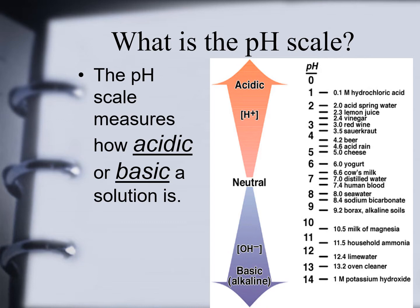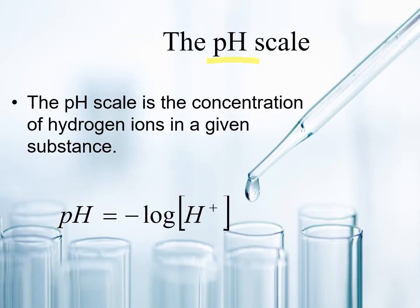Looking at the scale, this side is acids and this side going down is basic. Another term for basic is alkaline. A substance is acidic if it has a pH of 0 to 6, and basic if it has a pH of 8 to 14. Always remember that 7 is neutral — the best example is distilled water. pH stands for potential hydrogen, and the pH scale measures the concentration of hydrogen ions in a given substance.